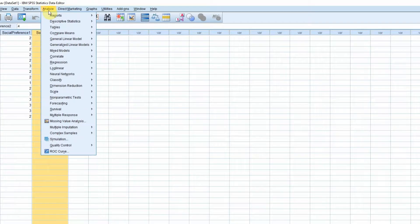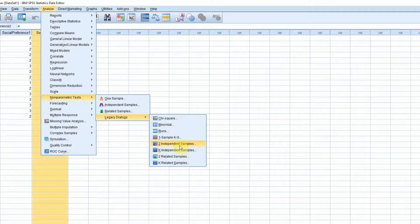In order to run Wilcoxon signed rank test, you go to Analyze, Non-Parametric Tests, Legacy Dialogue, and Two Related Samples.